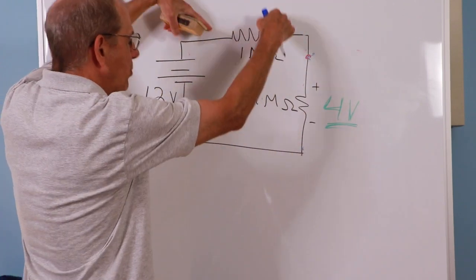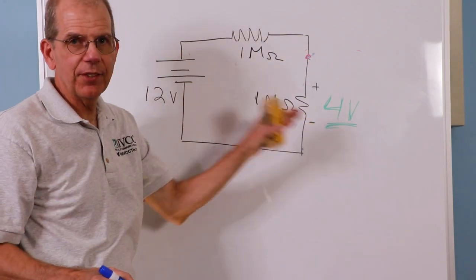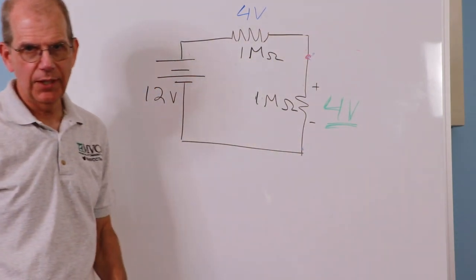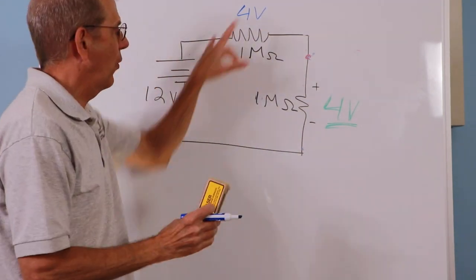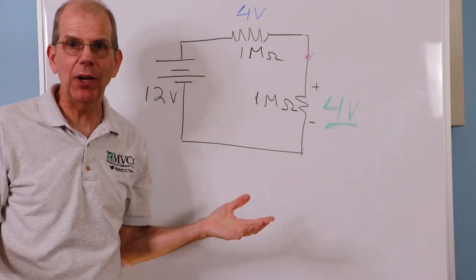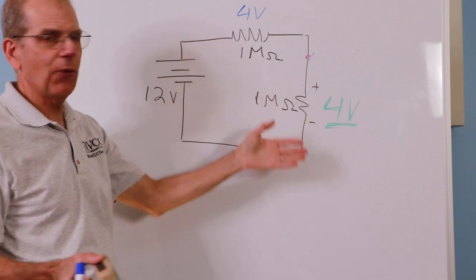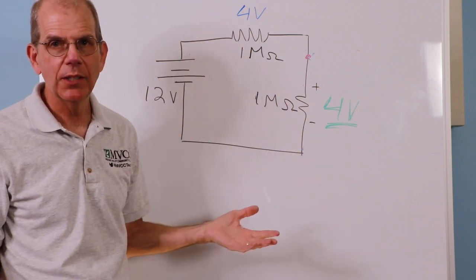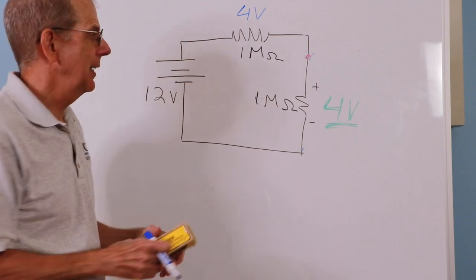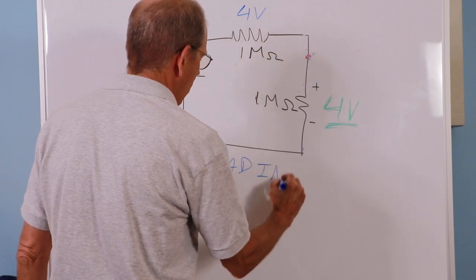But if you now pick up your meter leads, take them off this one, and you put them on this one, guess what? You're not going to read the difference 8 volts. You will, in fact, read 4 volts. So how is it that you get 4 volts and 4 volts, but you pick up your meter and put it across the power supply and it's still 12 volts? Well, last I checked, 4 plus 4 is 8 and 8 is not equal to 12. Where'd the other 4 go? Well, what ends up happening is this loading effect. You can no longer ignore it.